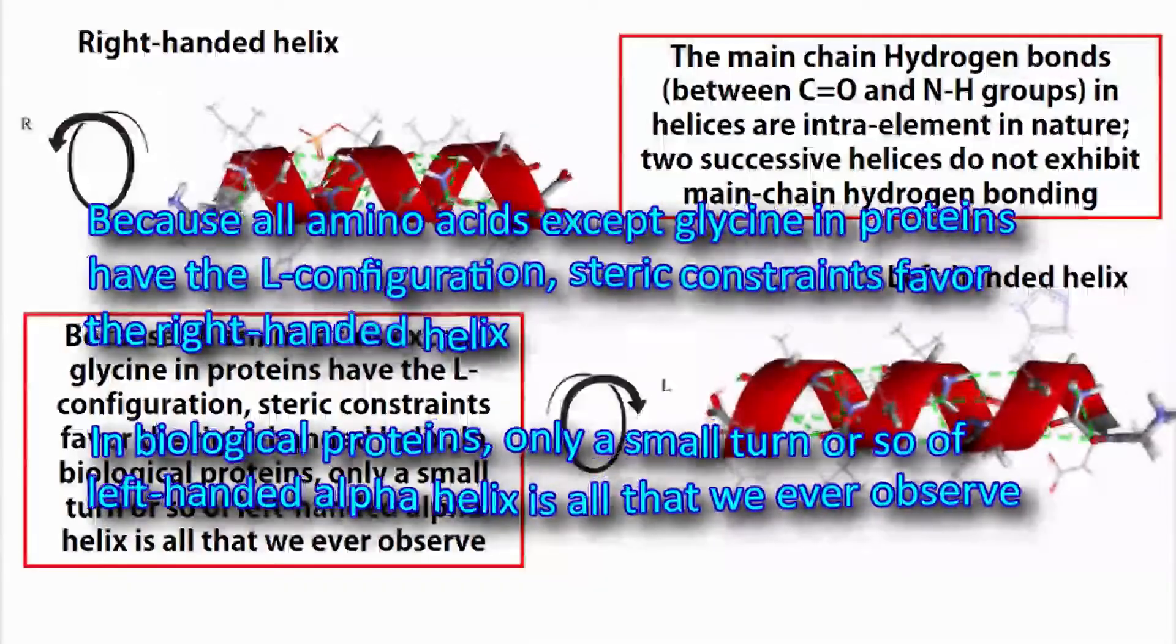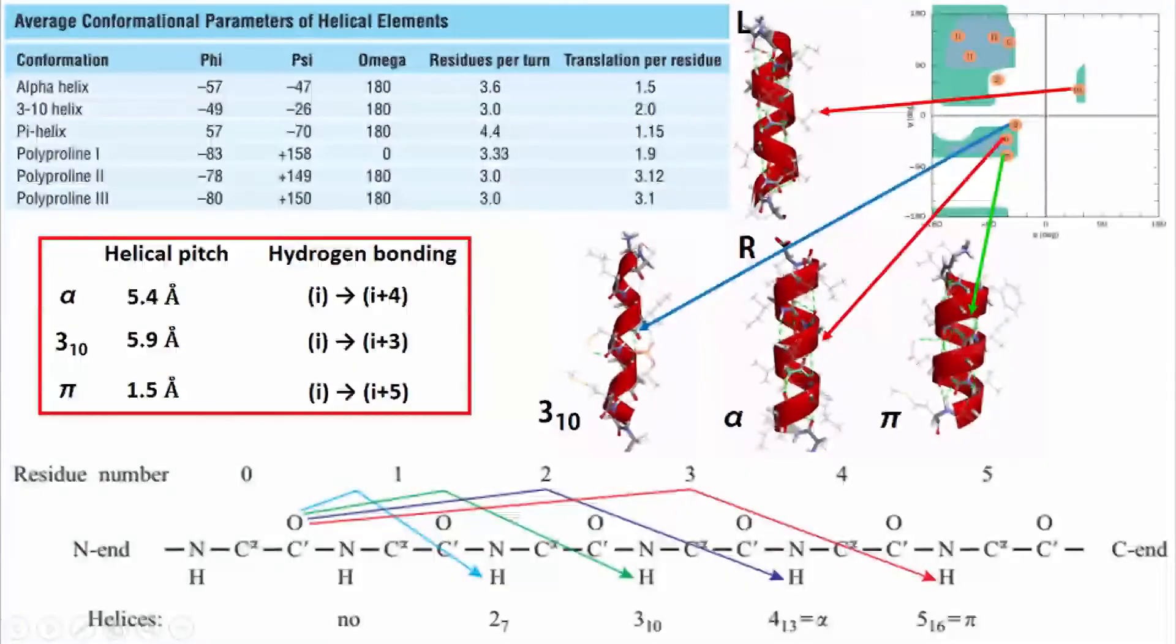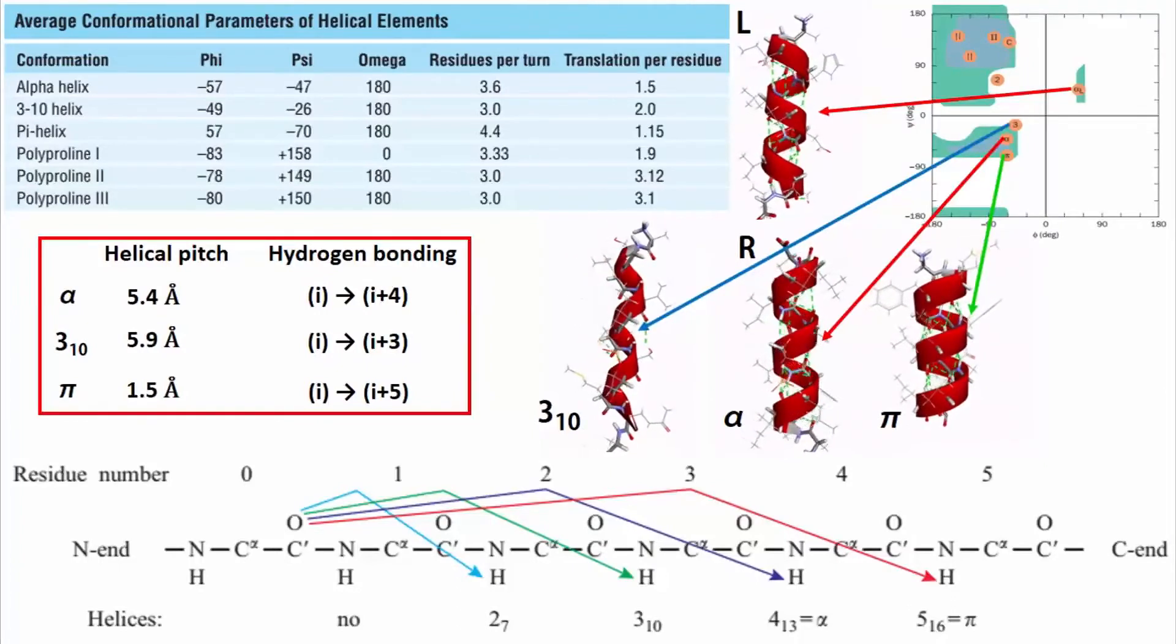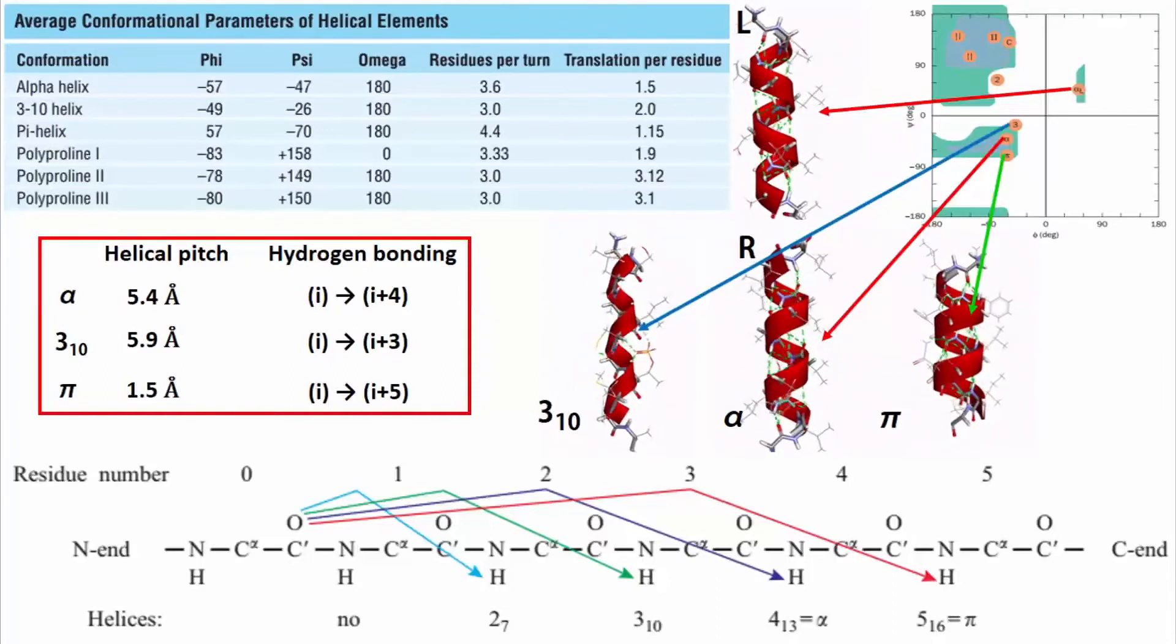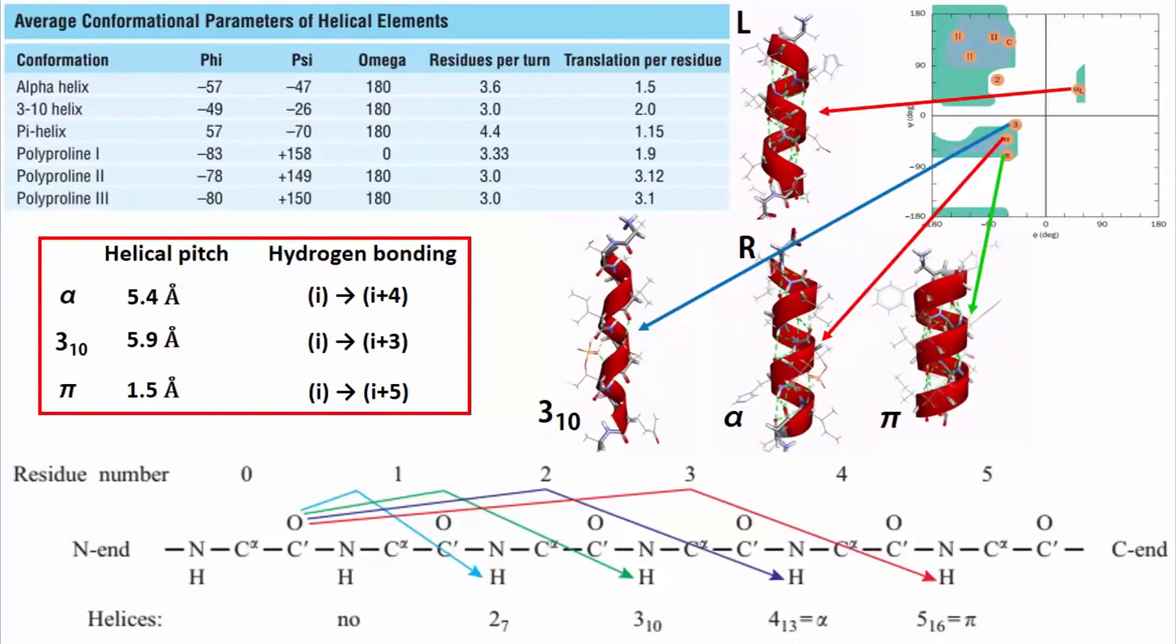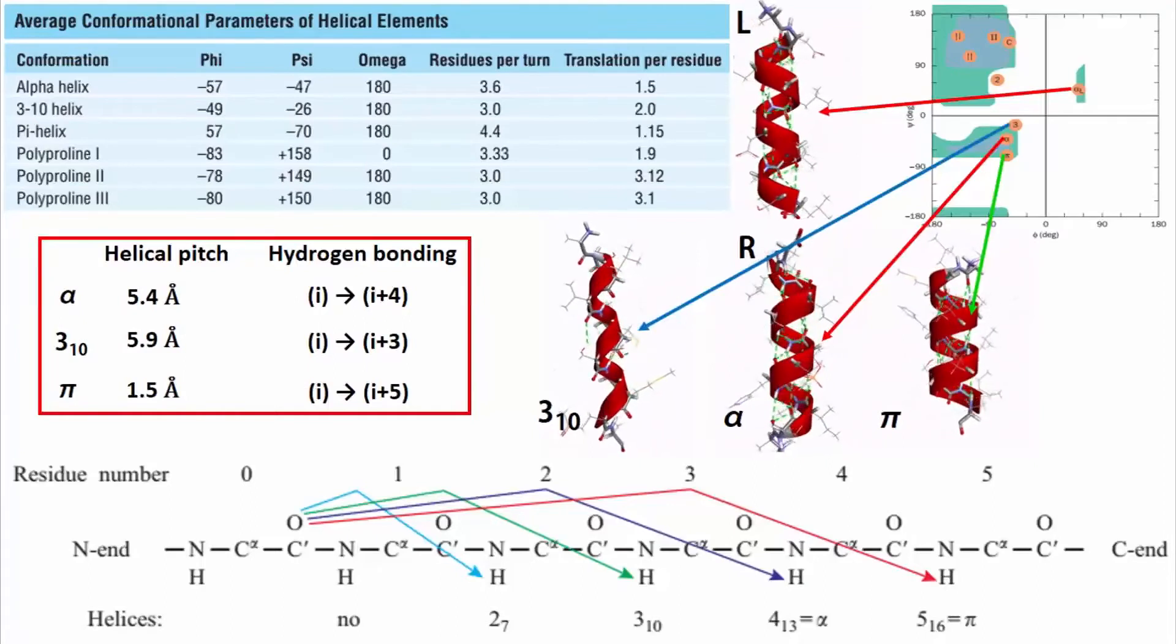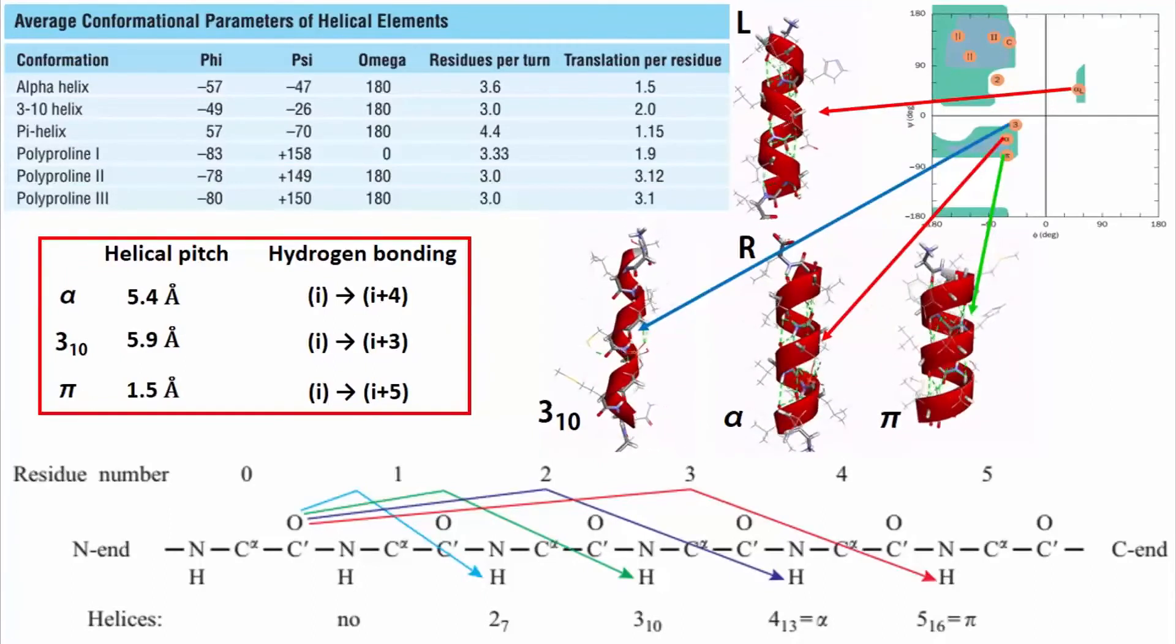In biological proteins, only a small turn or so of left-handed alpha helix is all that we ever observe. Alpha helix structure repeats itself every 5.4 angstrom along the helix axis. This is why we say that alpha helix has a pitch of 5.4 angstrom. Alpha helices have 3.6 amino acid residues per turn. So a helix of 36 amino acid length has 10 turns. The separation of residues along the helix axis is 1.5 angstrom. So the alpha helix has a rise per residue of 1.5 angstrom. Every main chain carbonyl and amino group is hydrogen bonded to a peptide bond 4 residues away. This gives a very regular stable arrangement.